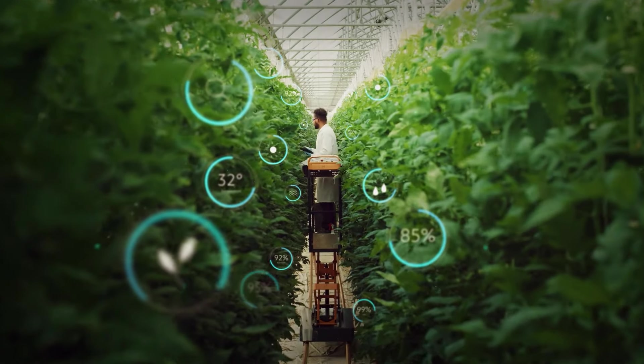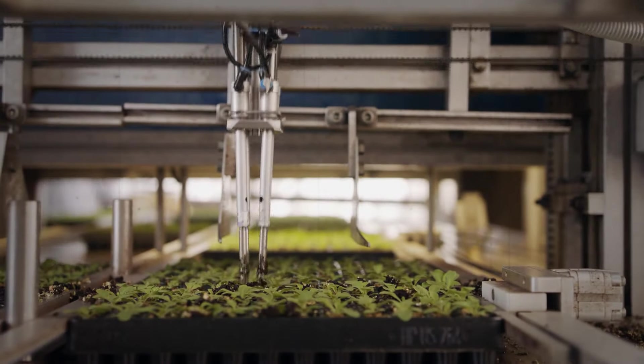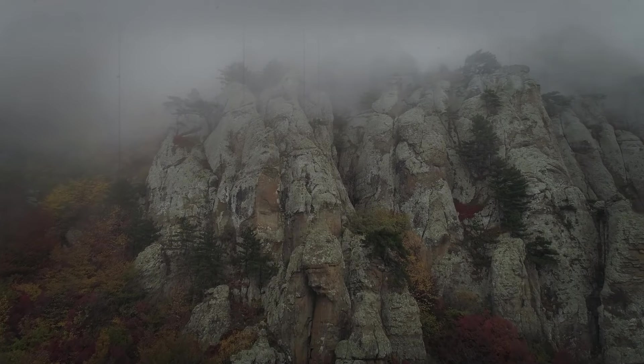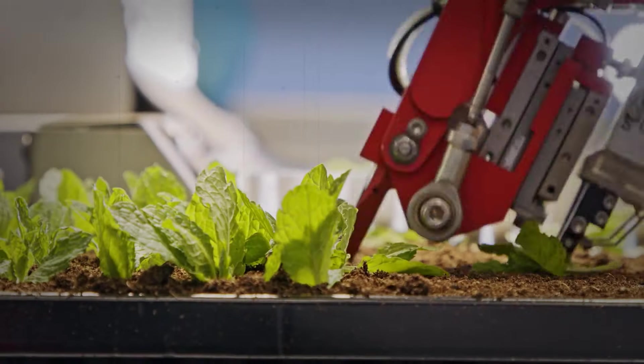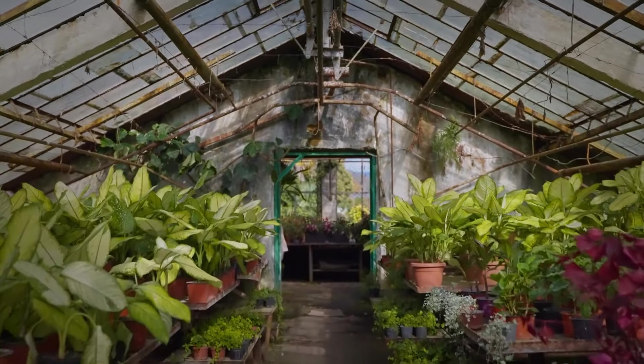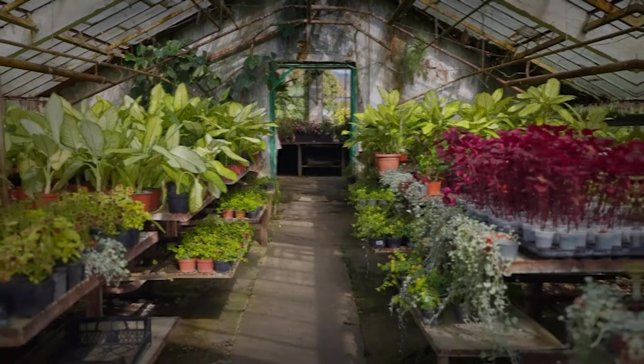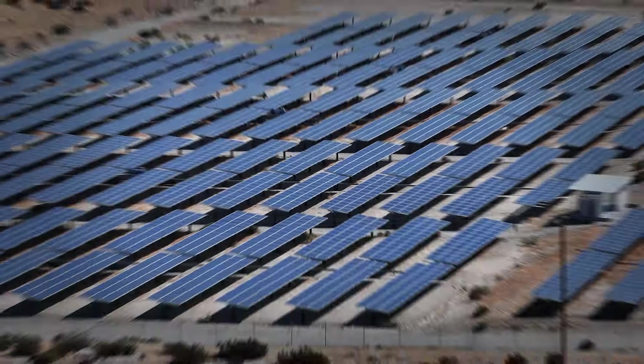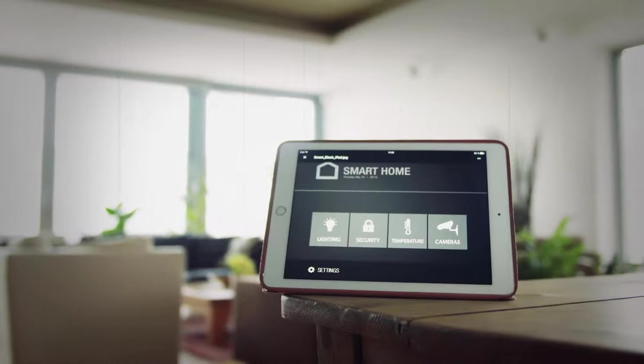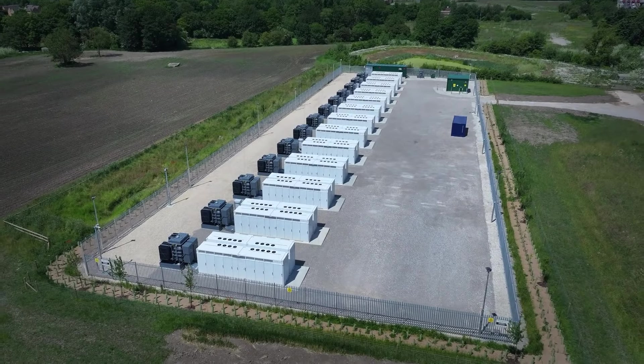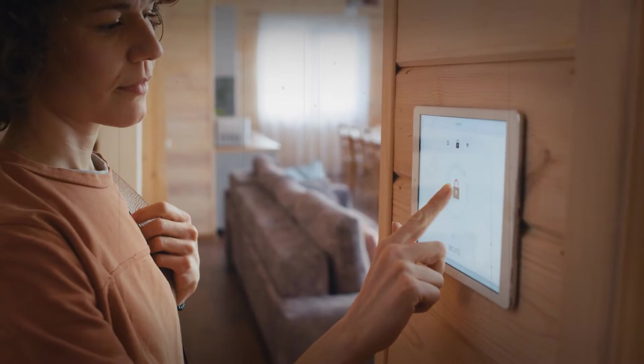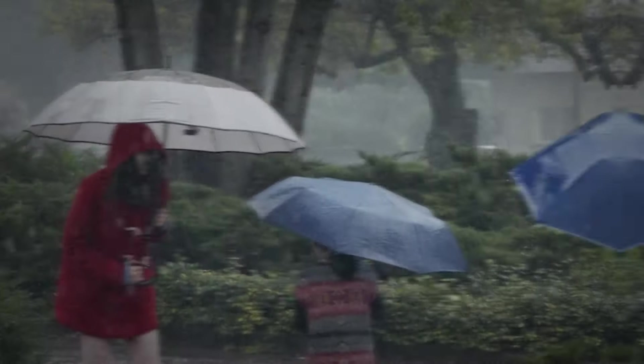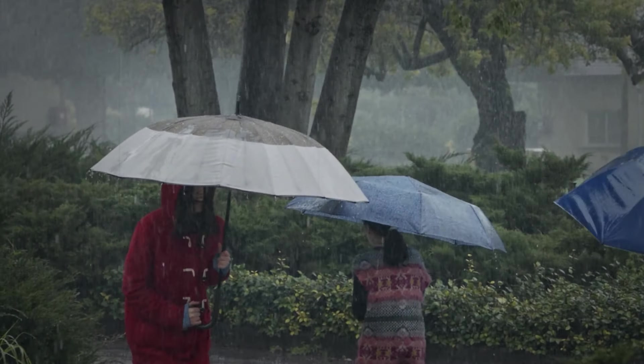Personalized weather control could redefine agriculture, enabling farmers to optimize growing conditions for specific crops. AI-driven precision in weather customization holds the potential to enhance crop yields and minimize the environmental impact of traditional farming practices. This not only addresses food security concerns, but also fosters sustainable agricultural practices. The integration of AI into personalized weather control could usher in a new era of energy efficiency. By aligning weather conditions with energy needs, individuals can optimize their energy consumption, reducing both costs and environmental impact.